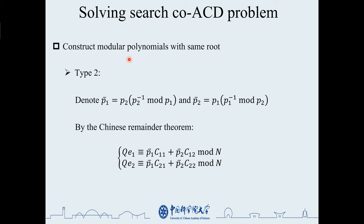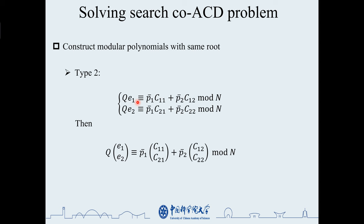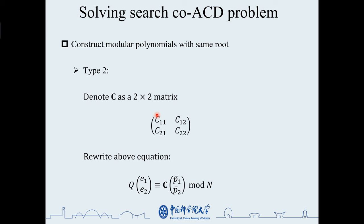Then, in type 2, by the Chinese remainder theorem, we can get new equations of modulo n. Then combine them together to get a matrix equation. Construct a 2 by 2 matrix C with each vector coefficient. Then the equation can be rewritten as follows.